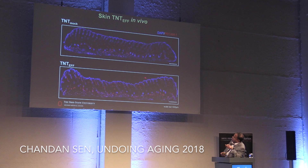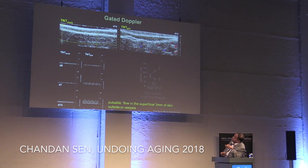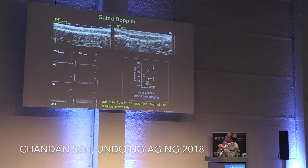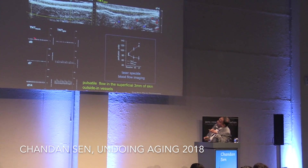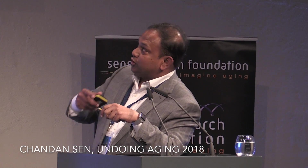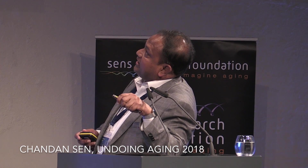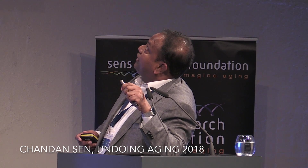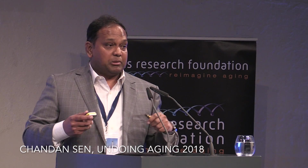In vivo, comparing TNT mock versus TNT-EFF on day seven, you can see vessels in the skin. On the functional side, in a Doppler study of the top three millimeters of skin, the TNT mock shows only trickling non-pulsatile blood flow, whereas our system — which we call 'outside-in' vessels originating from the skin and moving to muscle and bone — shows pulsatile blood flow in the superficial skin. This type of blood flow does not normally exist physiologically.